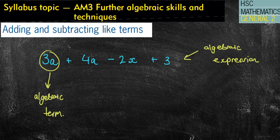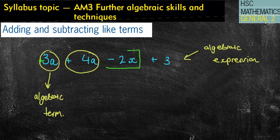So when we're adding and subtracting like terms, we want to look at the terms that are the same. In this case, they have the same letter or the same variable. For example, we have the 3a and the plus 4a. You'll notice that I always include the sign in front of it. We've also got the minus 2x, that's one term. And then the plus 3, which is another term on its own.